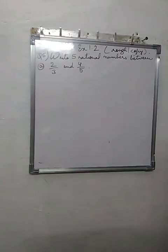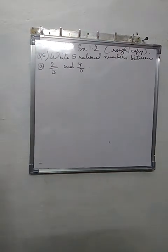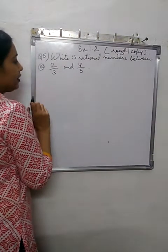Starting with the next question, question 5: write 5 rational numbers between 2 by 3 and 4 by 5. Again, first we make the denominators same.